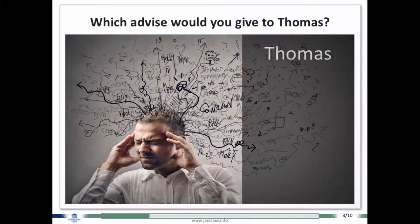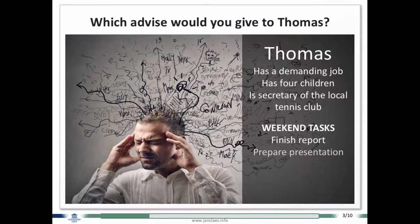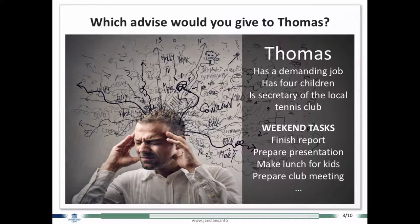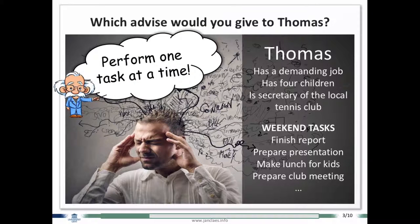Well, for example, meet Thomas. He's a very busy man. He has a lot of things to do. And the question is, which advice would you give to Thomas? The advice you normally give to somebody who's panicking because there's too much on his plate is keep it easy, don't worry, perform one thing at a time. Don't try to do everything together, do one thing at a time.